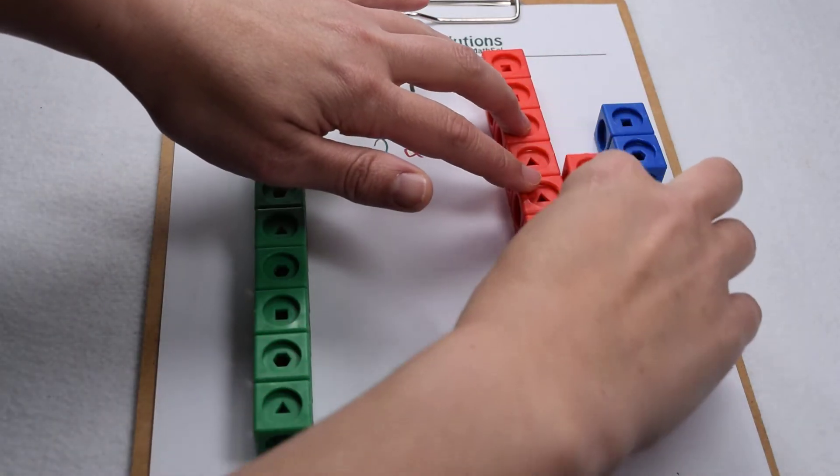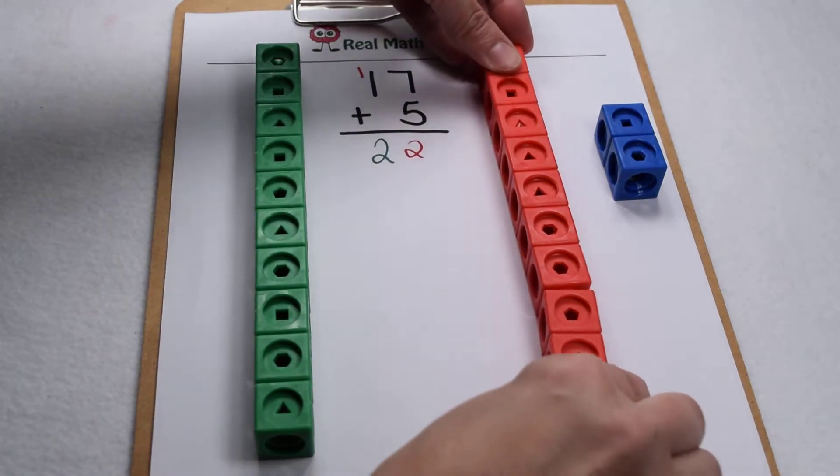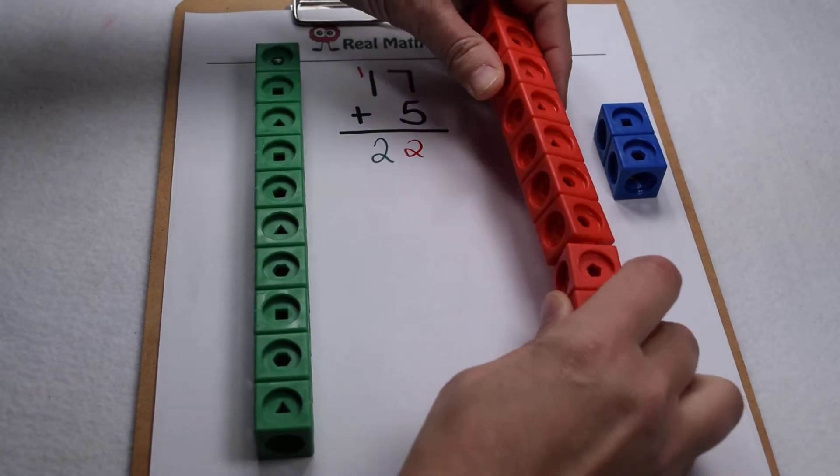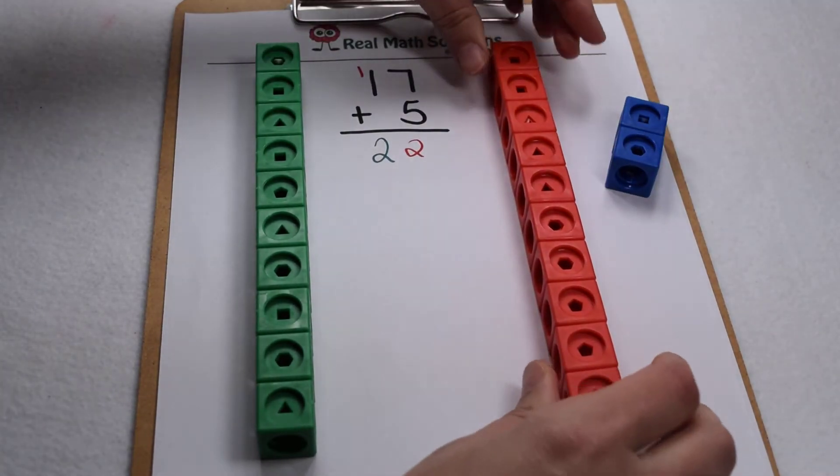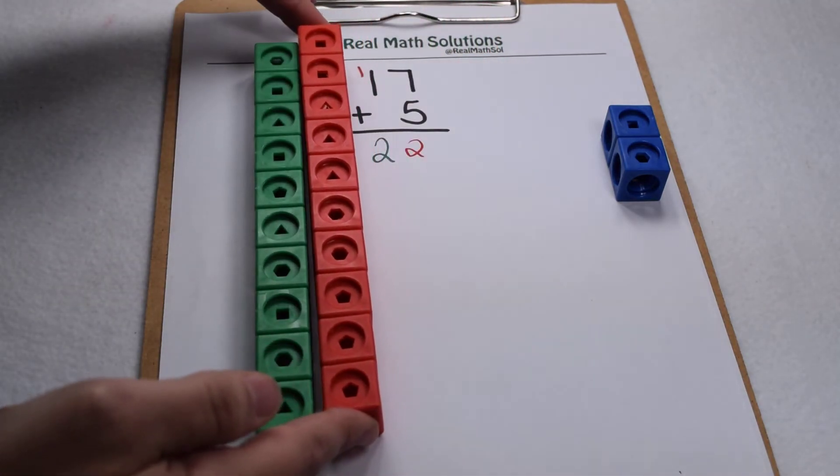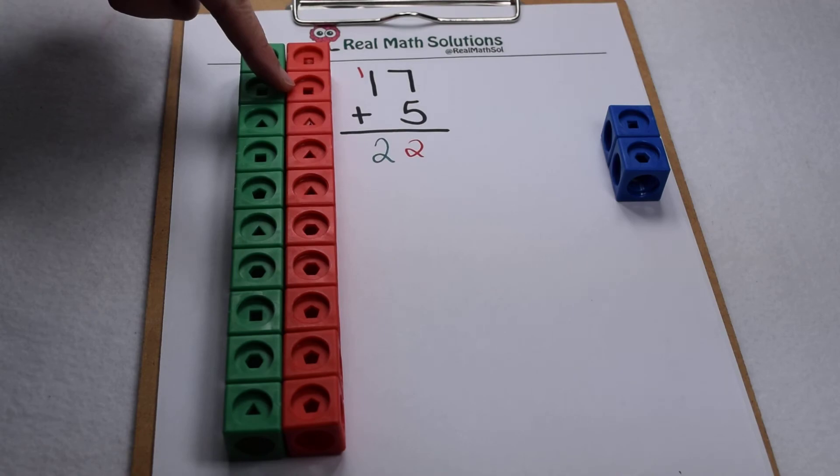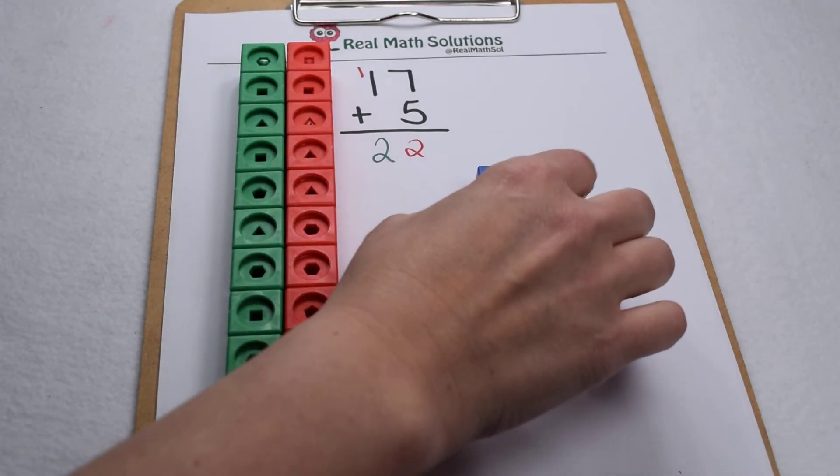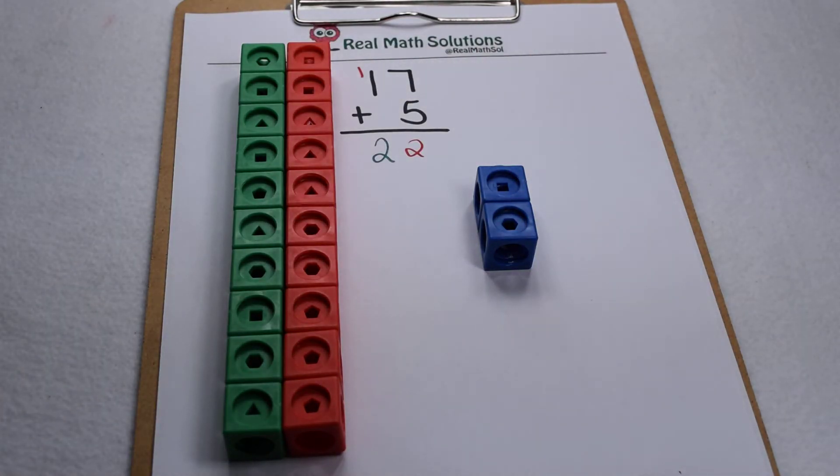Well, if we model that out, that means I'm going to finish putting my group of 10 together. So here, 7 plus 3 of those gives me 10, plus my 2. So now, I have a group of 10, which is where my carried 1 comes from, making another group of 10, and my 2 cubes left over to give me 22.